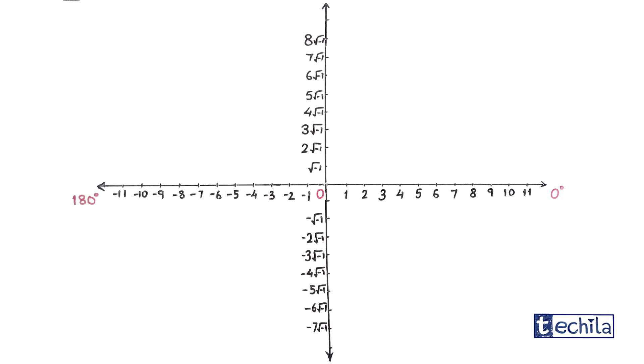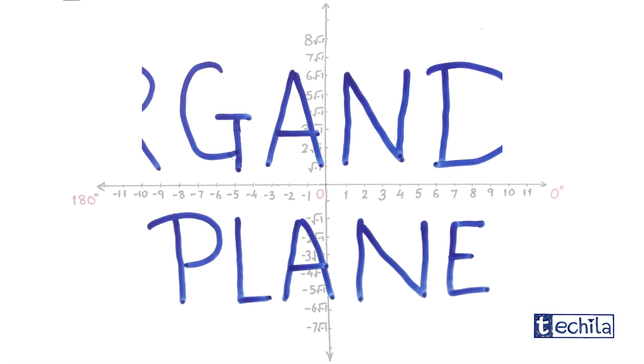This axis was named as the imaginary axis and the horizontal axis was named as real axis. The plane defined by these two axes is called Argon's plane.